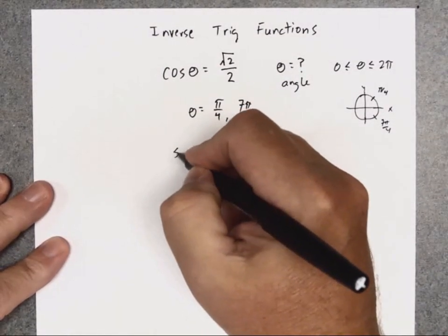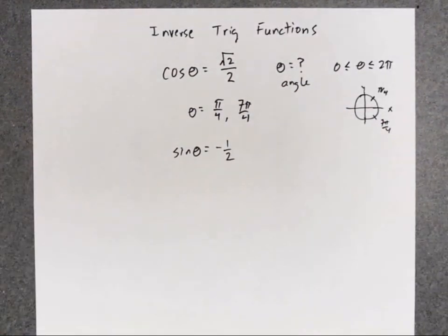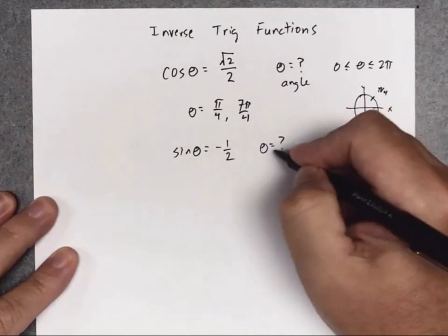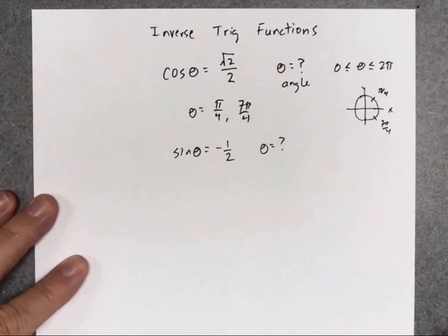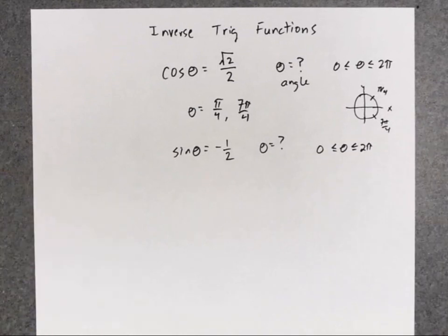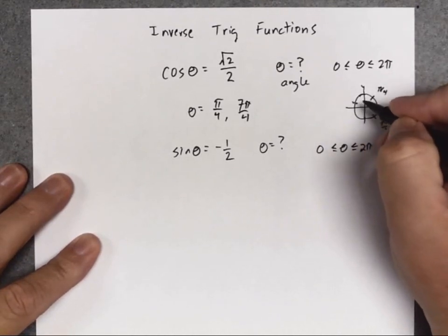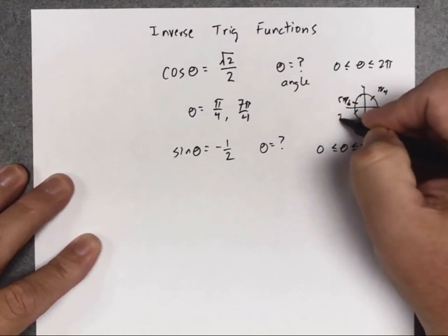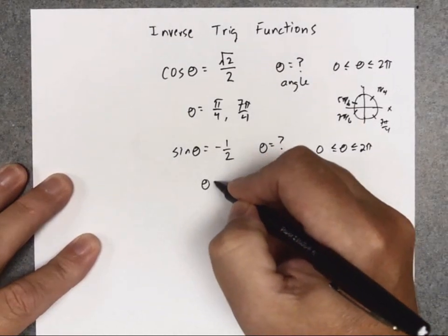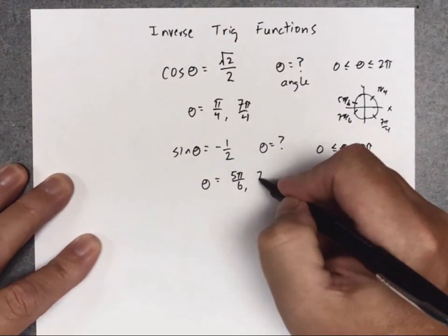Now let's do a sine example. We're asked to solve the equation sine of theta equals negative 1/2. Once again, we're looking for an angle — or even more than one angle. We'll limit ourselves to 0 to 2π. So you go find the angles where the sine is negative 1/2, and that occurs at 5π/6 and at 7π/6. This is basically just a function of remembering and understanding the unit circle.